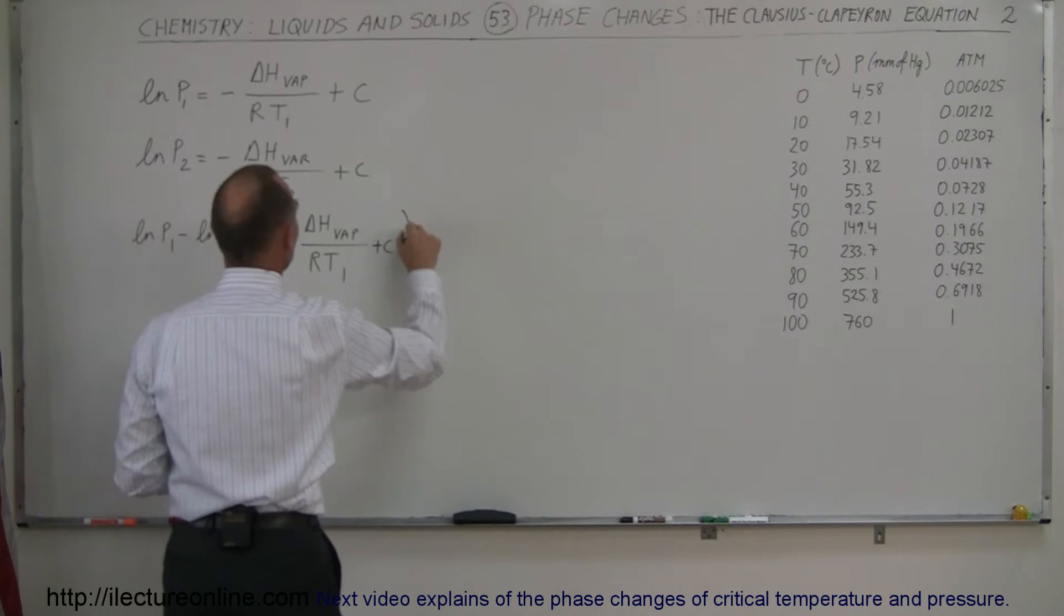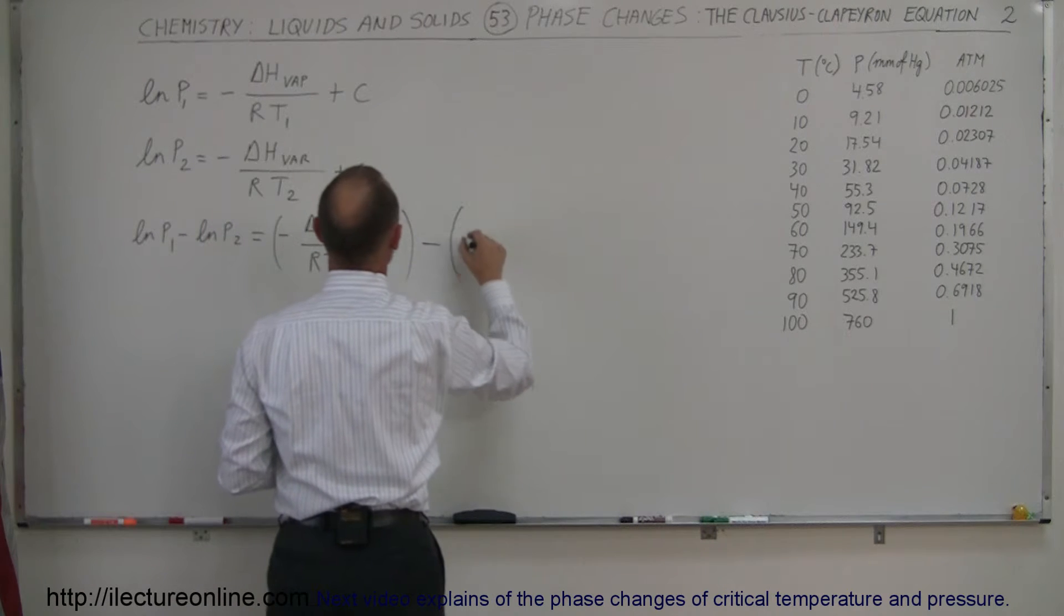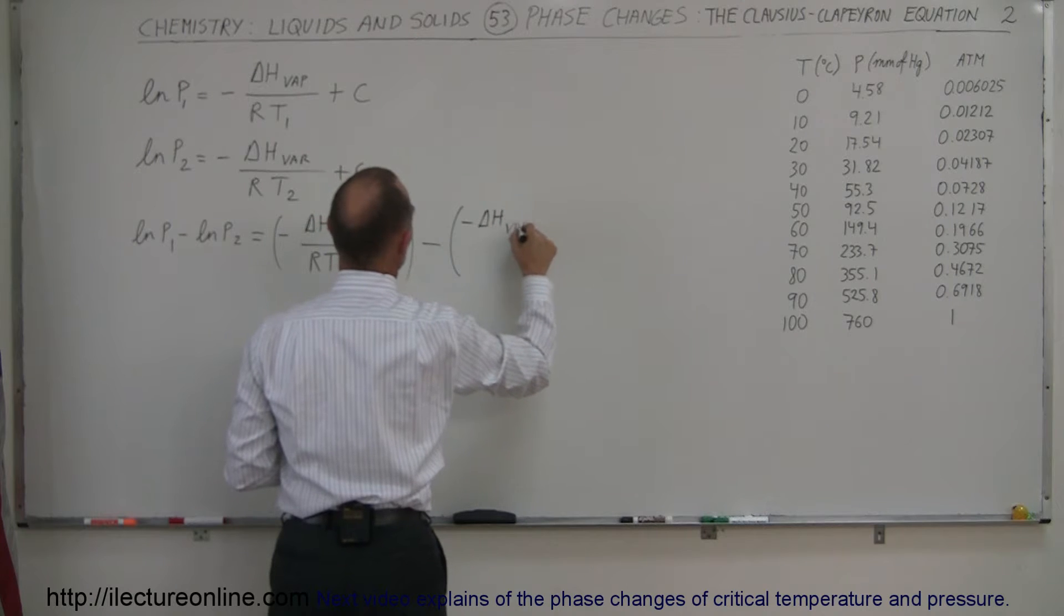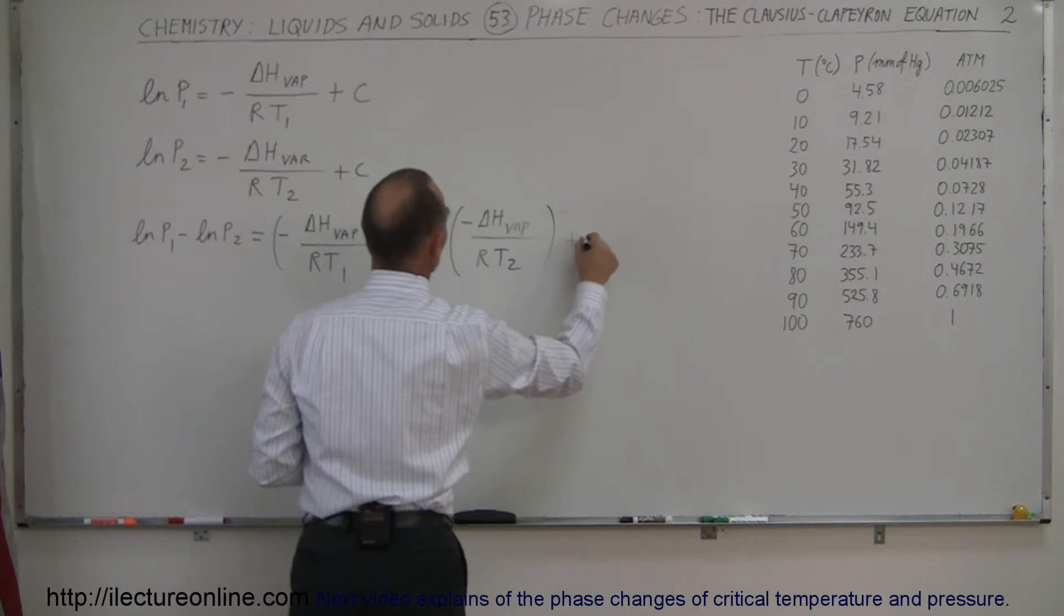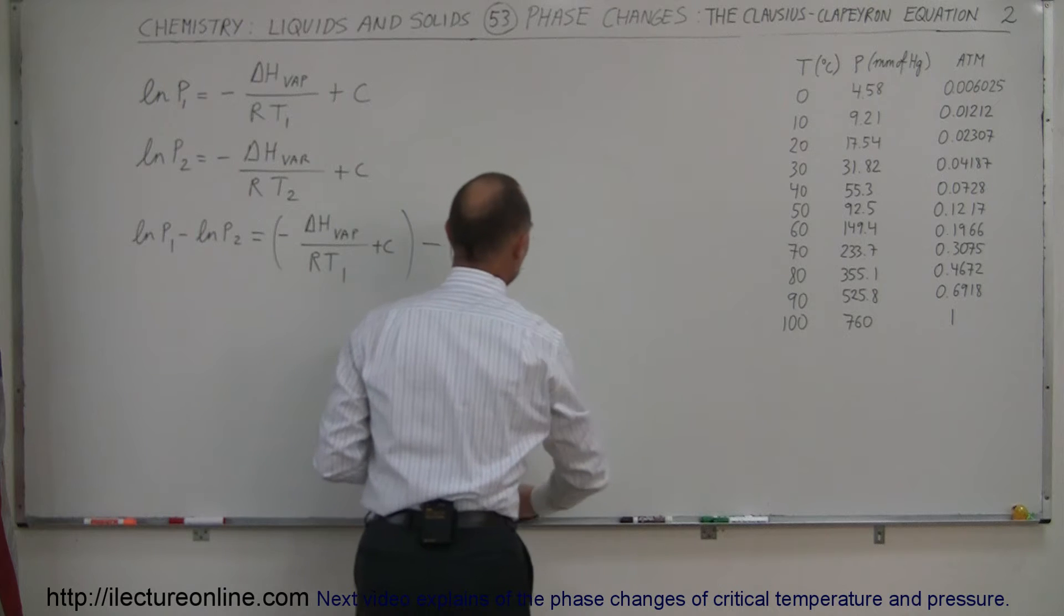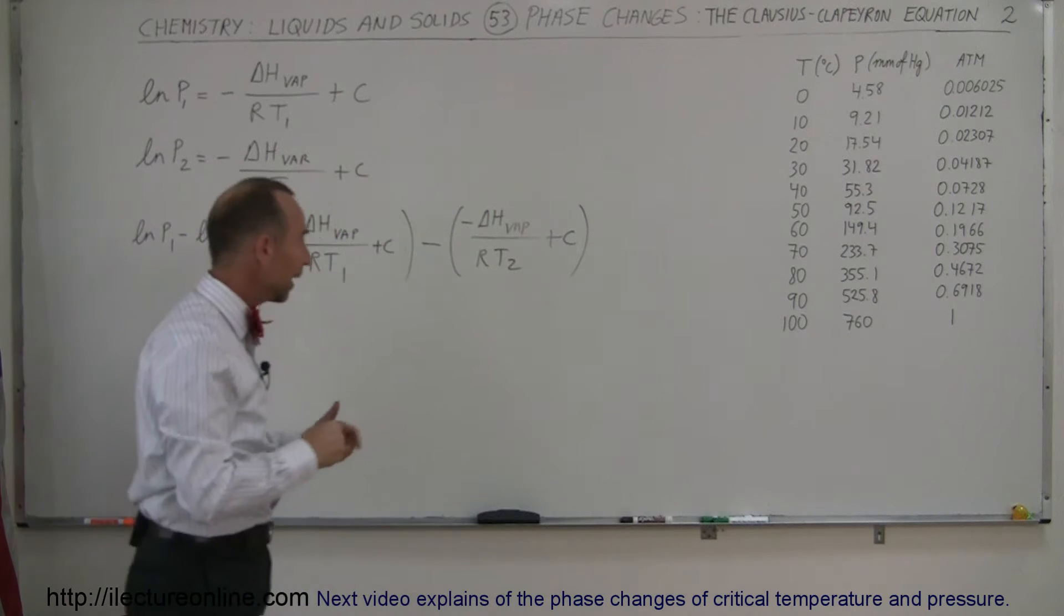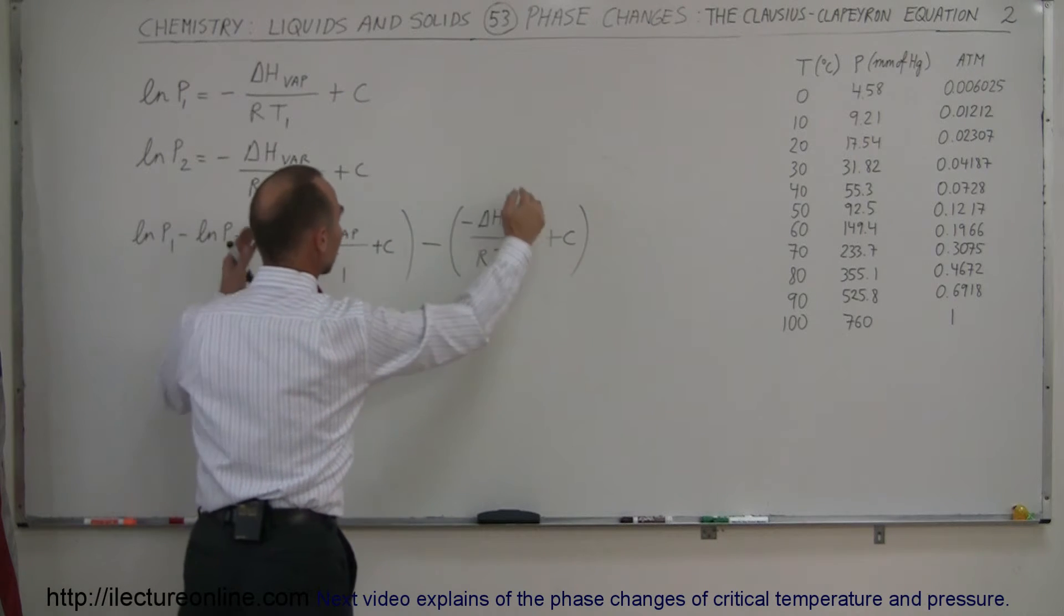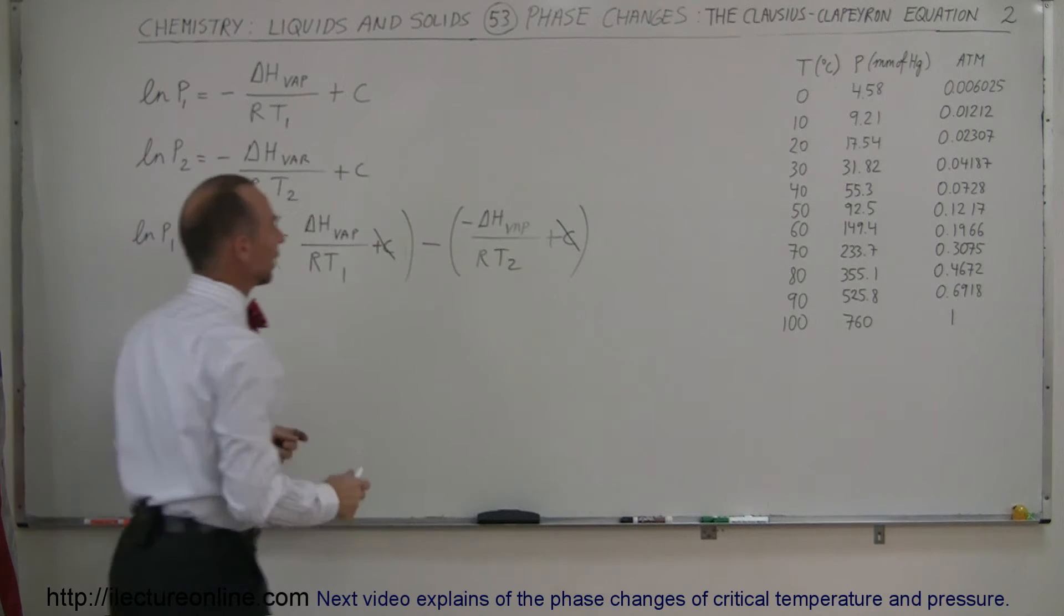So we have delta H vaporization divided by R times T1, plus the constant. We're going to subtract from that this portion of the bottom equation: minus delta H vaporization divided by R times T2, plus a constant. Notice that we have a plus C minus C here, and the C's drop out.